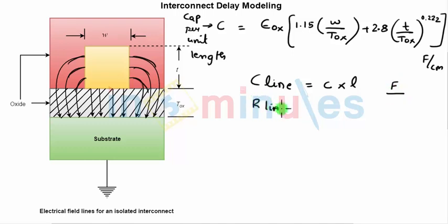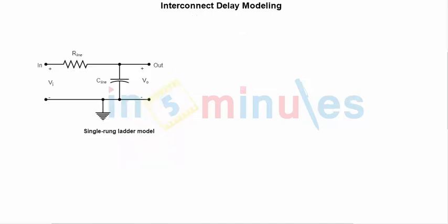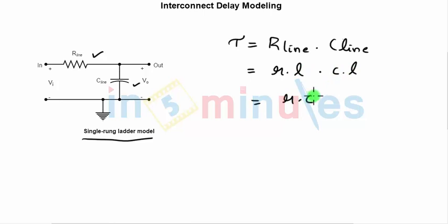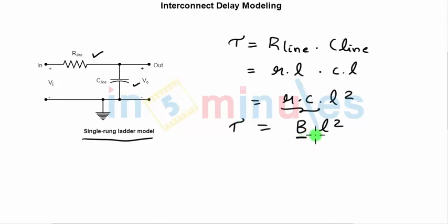So we have R_line = r × L and C_line = c × L. Combining these, we can construct a single-rung ladder model with R_line and C_line. The time constant tau = R_line × C_line = (r × L) × (c × L) = rc × L². If we set rc equal to a constant B, then delay increases with the square of length: if length is 1 unit, delay scales to 100 if length is 10.